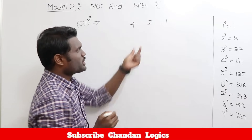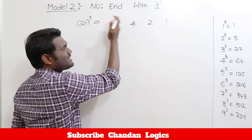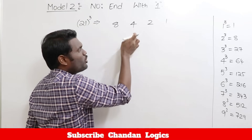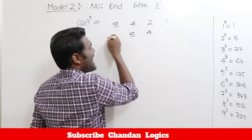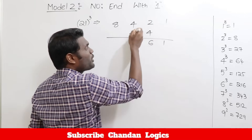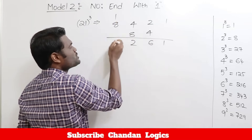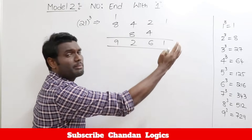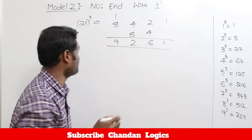Cube of the second number: 2 cubed is 8. Leave first and last numbers, double the middle: double 4 is 8, double 2 is 4. Now add — reading right to left: 1; 2 plus 4 is 6; 4 plus 8 is 12 — write 2, carry 1; 8 plus 1 carry is 9. So 21 cubed equals 9261. The only difference is you move from right to left.